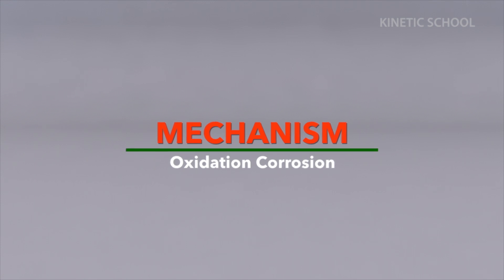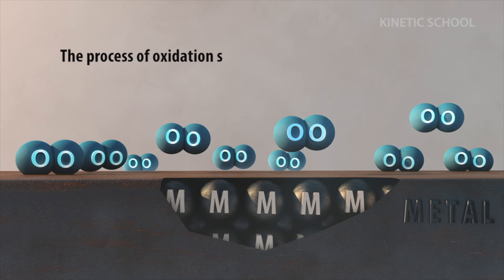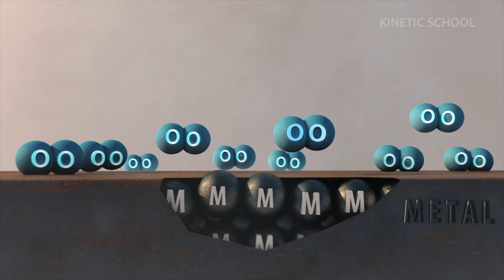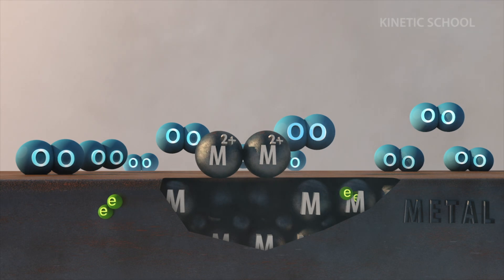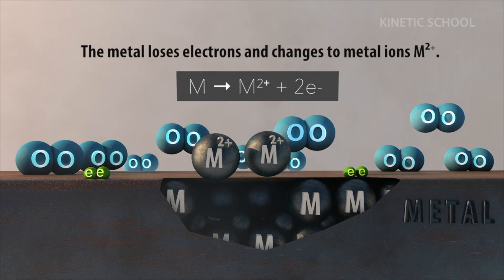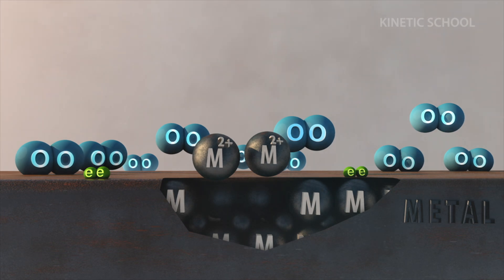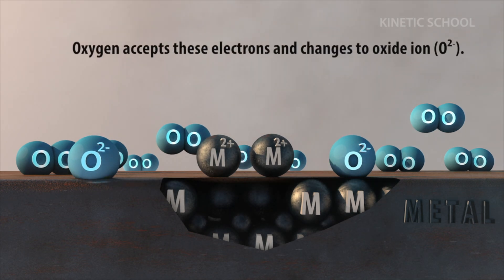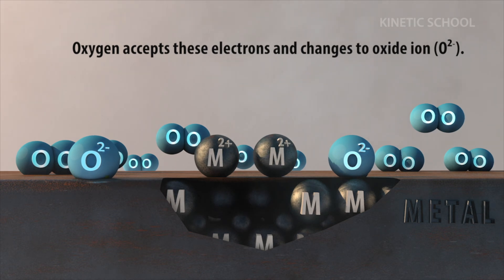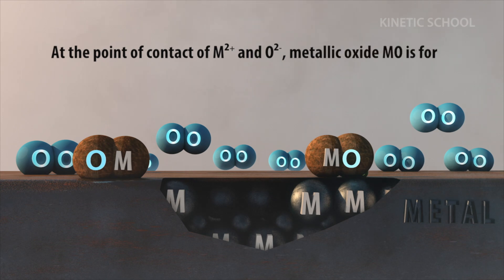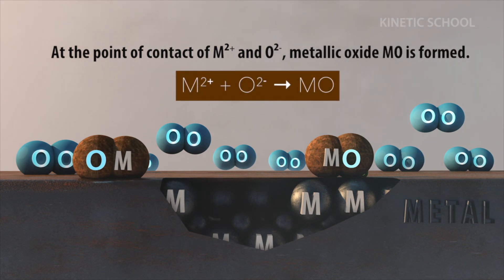Mechanism of oxidation corrosion. The process of oxidation starts at the exposed surface of the metal. The metal loses electrons and changes to metal ions. Oxygen accepts these electrons and changes to oxide ions. At the point of contact of metal ion and oxide ion, metallic oxide is formed.